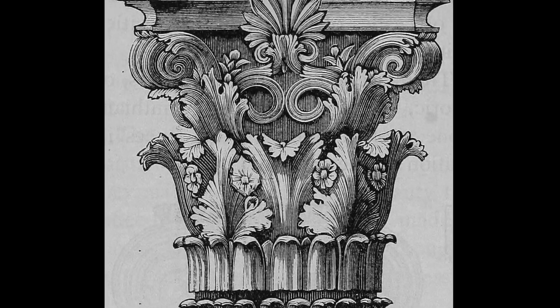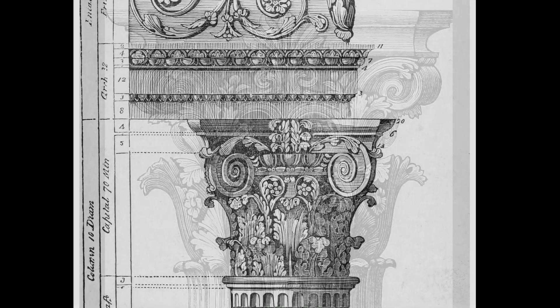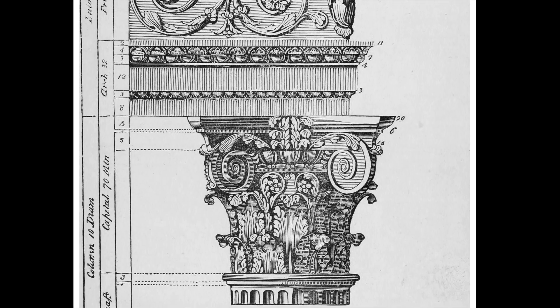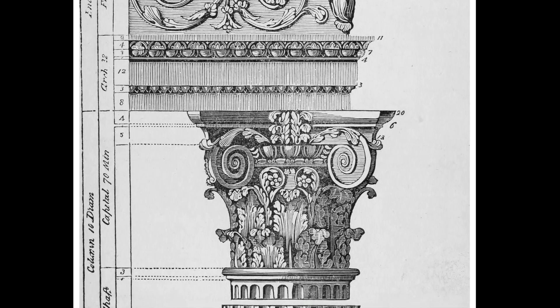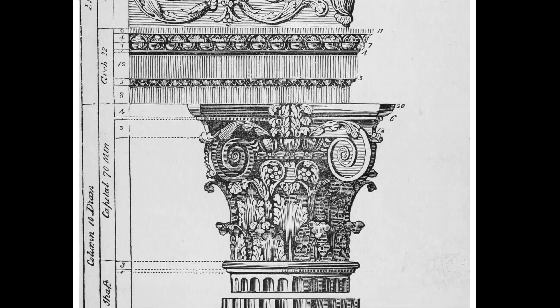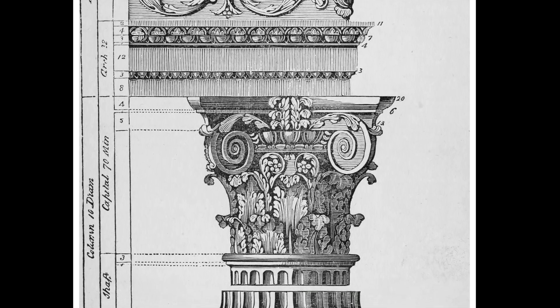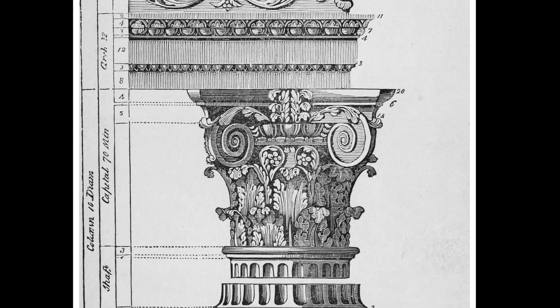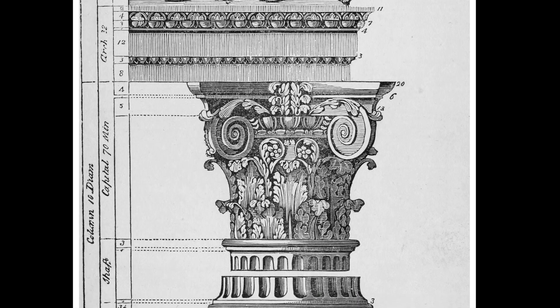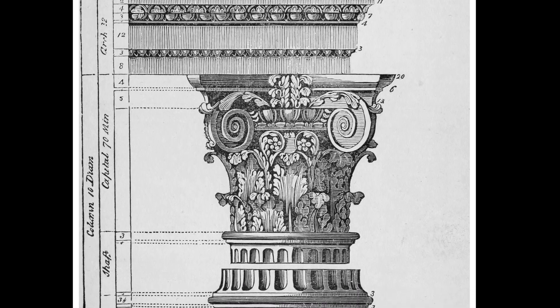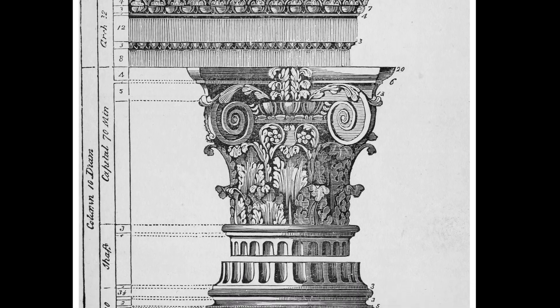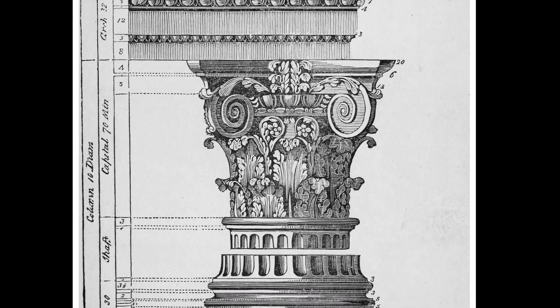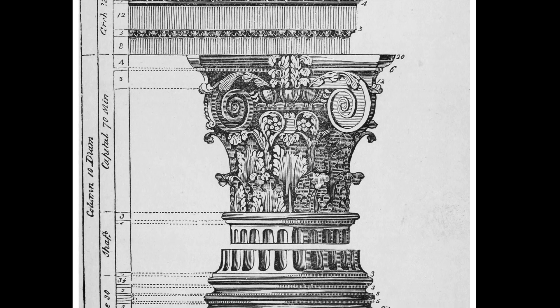The composite order is the last of the five classical Roman orders. The capital is unique because it combines the volutes of the Ionic order and the acanthus leaves of the Corinthian.